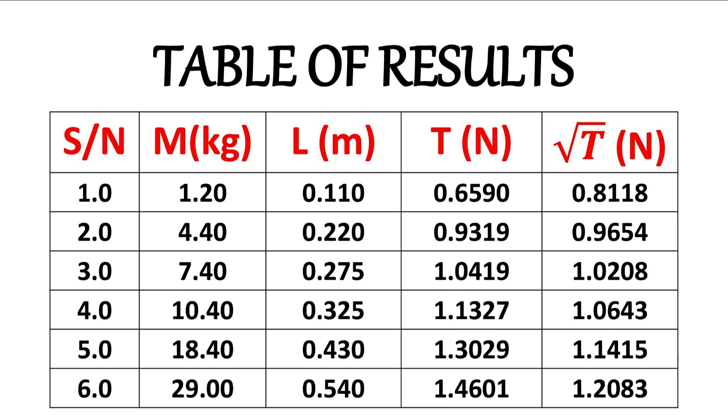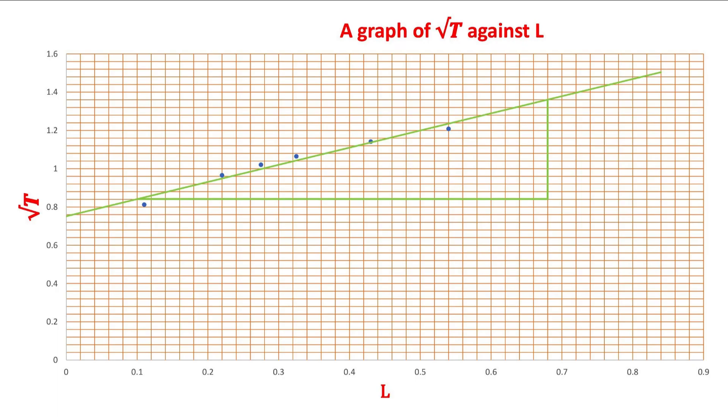The mass and the length, the tension and the square root of the tension were all deduced and calculated. Once this is done, we can proceed to plot the graph. Recall that we were asked to plot a graph of the square root of T against L, and you can see here from our graph that it is a straight line that makes an intercept from the vertical axis.